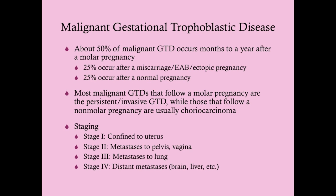Malignant GTD: about 50% occurs within months to a year after a molar pregnancy, so most cases will come after a molar pregnancy. 25% occur after a miscarriage, an elective abortion, or an ectopic pregnancy. The inclination here is that these weren't normal pregnancies to begin with — they were probably partial moles that miscarried and were never diagnosed. Same with the elective abortion or ectopic pregnancy.